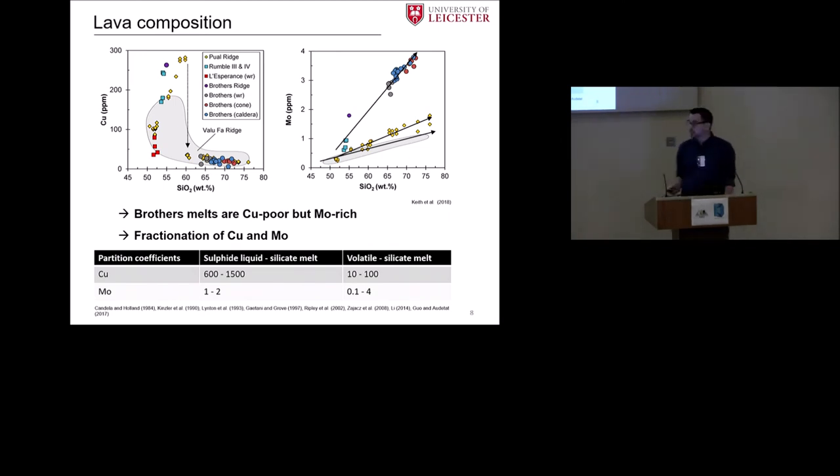Another test now would be, as I mentioned before, what effect could magmatic volatiles have? If we have a look now again on the distribution coefficients between volatile phase and silicate melt, we see copper is also much more compatible in there than moly is. So basically, we could also explain it possibly by the release of magmatic volatiles. The next step now is to test and to find out whether there is significance for that.